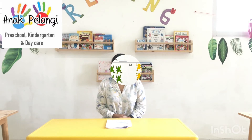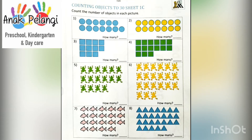Check it out! Hi students! Today, we are going to learn about writing number 1 until 30. Please look at the pictures here. Count the number of the objects and then write how many there are. Let's start from number 1.